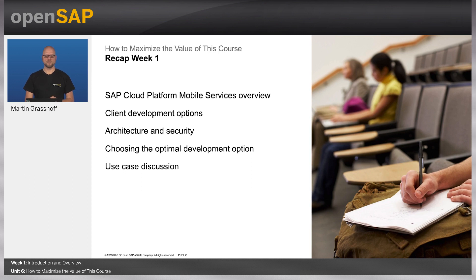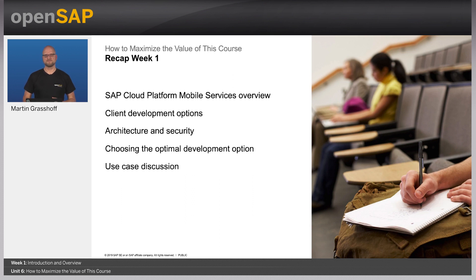In this course, we have discussed SAP Cloud Platform mobile services in general — what the service provides, the boundary of the service, and how it relates to SAP Cloud Platform itself. We have discussed the development options: native, mobile development kit, and SAP mobile cards. We have discussed the architectures for mobile app solutions and touched a little on the security topic. We also discussed how to choose the right development approach for your project, which can be a difficult discussion for various teams, but in the end you will make the right choice. And in this unit, we discussed the use case that we will run throughout the remaining course — the canteen menu.